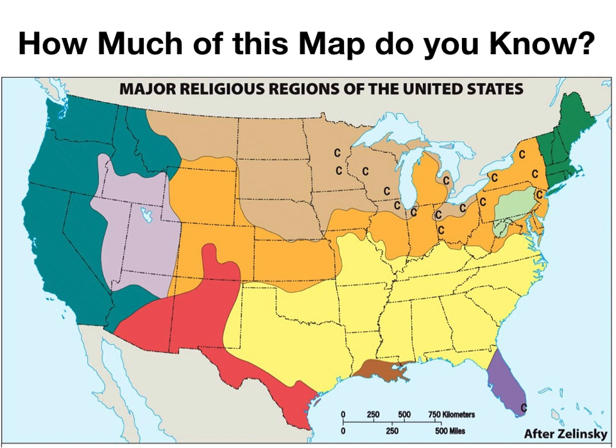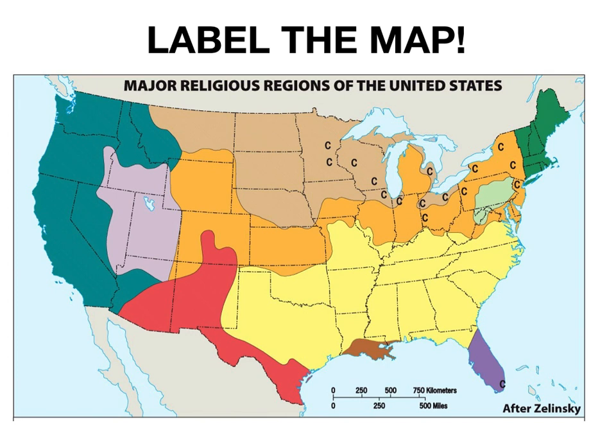The first question is: how much of this map do you know? This is a basic map that shows overall religious patterns in the United States. Before I label the map for you, just take a few seconds to look and see if there are any religions on here that you can identify. Now we'll label that map together. We're going to start on the west coast, which is mixed — there are quite a few different religions and no single religion dominates.